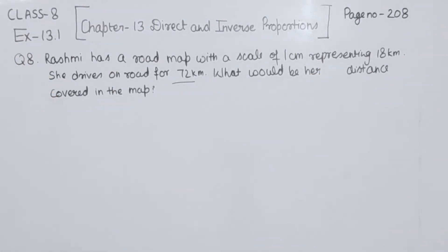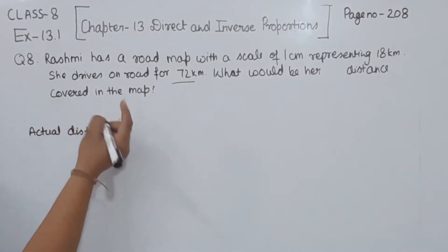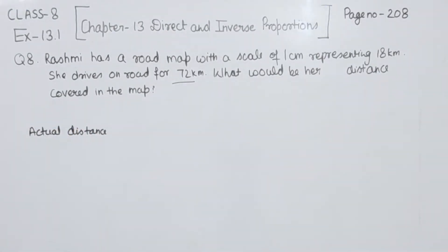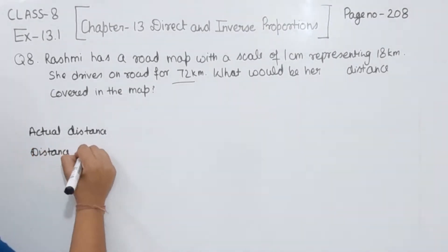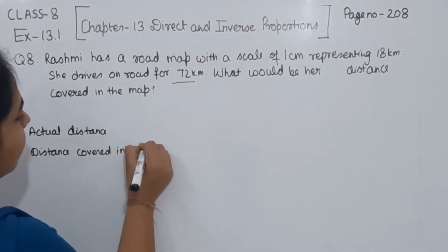So first of all, we are going to write what we are having. We are having the actual distance and we are having the distance covered in the map. I am going to write here, distance covered in map.